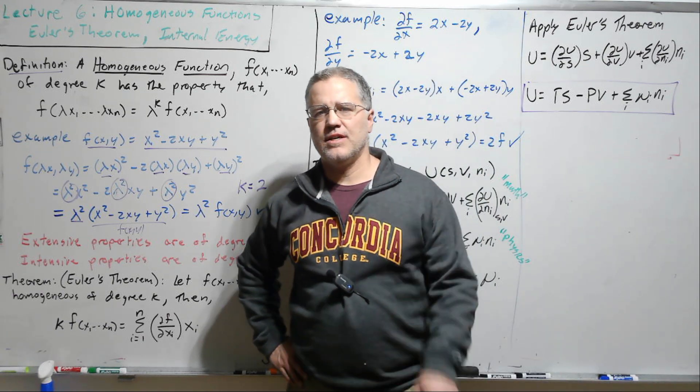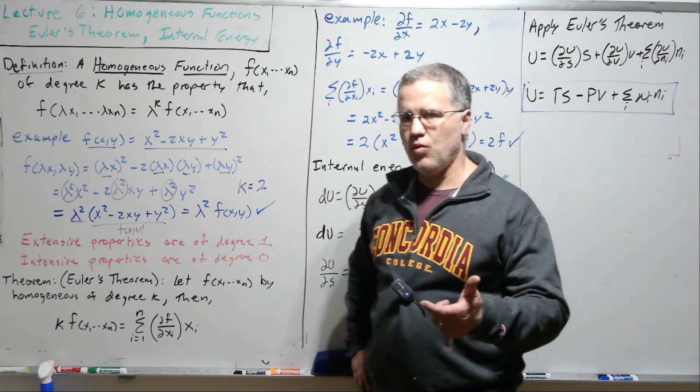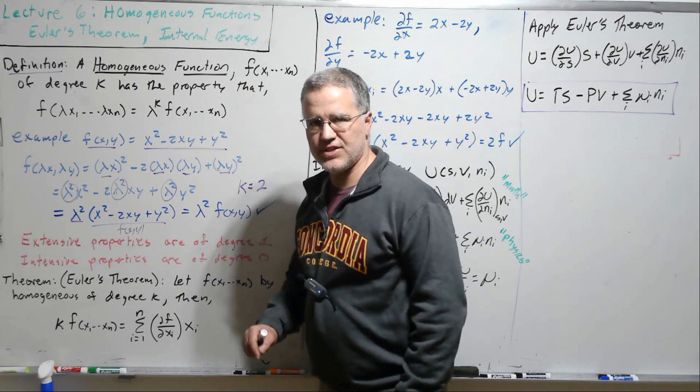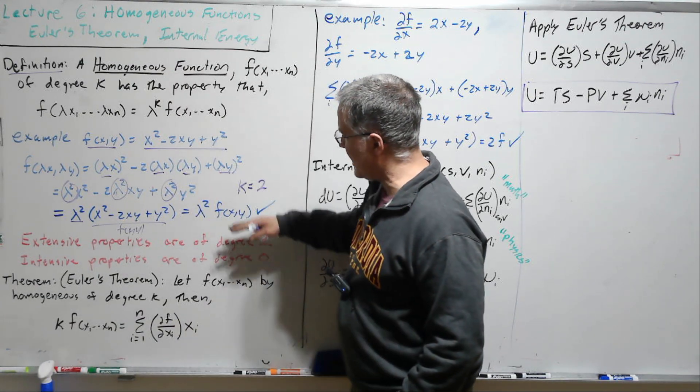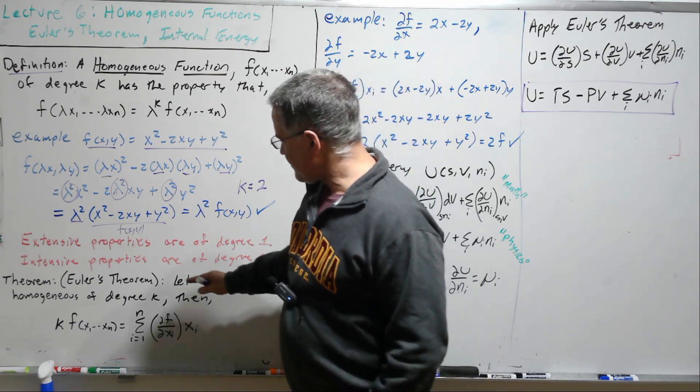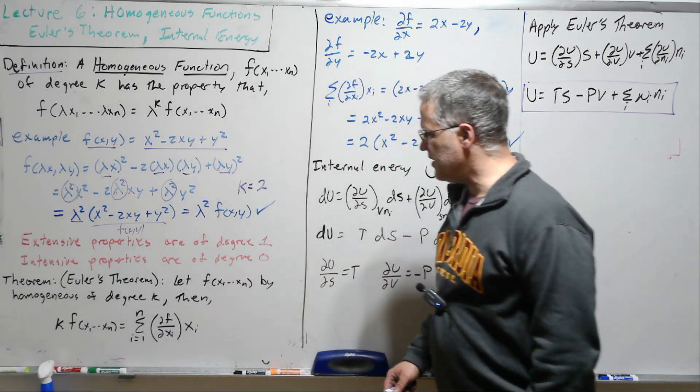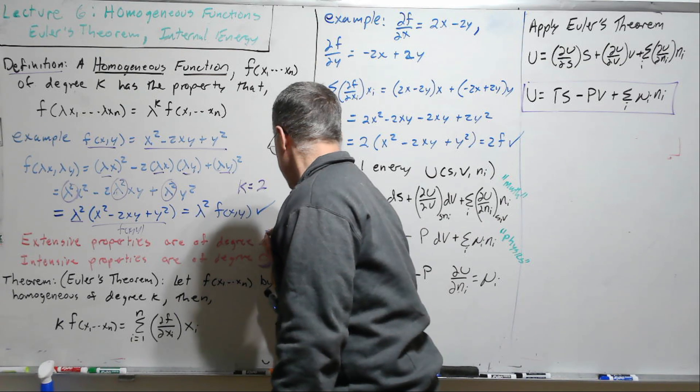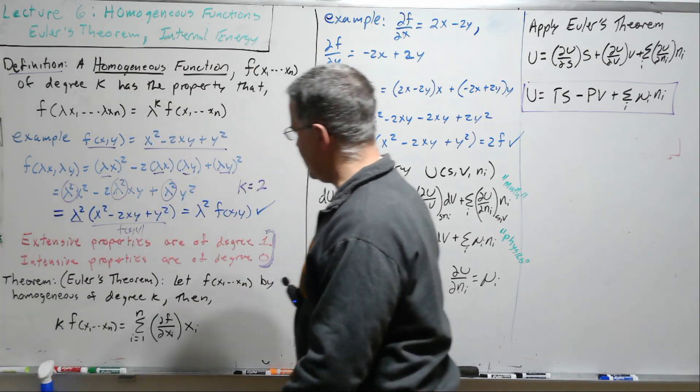All right, well stemming out of the axioms that we talked about on the first day, the lecture 0, the introduction to the course where we talked about what was the level of rigor here in this course, we said that the extensive properties are linear functions of the amount of material and so that parlays itself in this language to homogeneous functions of degree 1. And then the intensive variables are independent of the amount of material, so they're going to be homogeneous functions of degree 0. So we're not going to prove this. We're going to take that as stemming straight from our axiom about the linear dependence of the extensive functions.